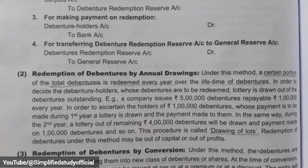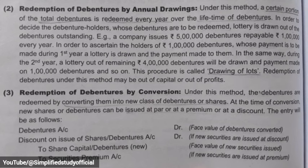The third method is Redemption of Debenture by Conversion. In this case, the debentures being redeemed are converted into a new class of debentures or into shares. For example, 5% debentures may be converted into 10% debentures. The journal entry for conversion is: Debenture Account debit to Discount on Issue of Share or Debenture Account, to Share Capital Account or Debenture Account, and to Securities Premium Account as applicable.